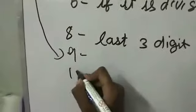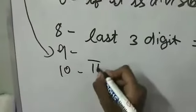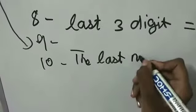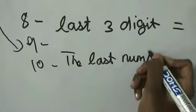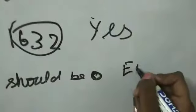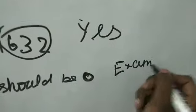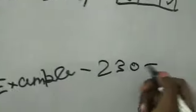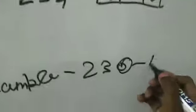For 10, the last number should be zero. Example: 230. Zero is coming in the last, so yes, it is divisible.